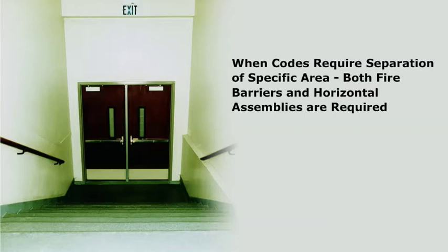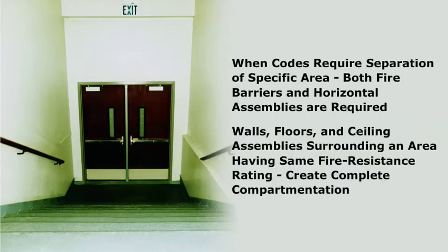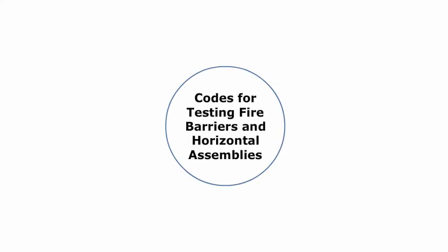In most cases when the codes require the separation of a specific area, both fire barriers and horizontal assemblies are required. When the walls, floors, and ceiling assemblies surrounding an area have the same fire resistance rating, it creates a complete compartmentation both vertically and horizontally — like a four-sided box with a top and bottom. An example would be the enclosure of an exit stairway where all four walls, the floor, and the ceiling or roof have a two-hour rating.